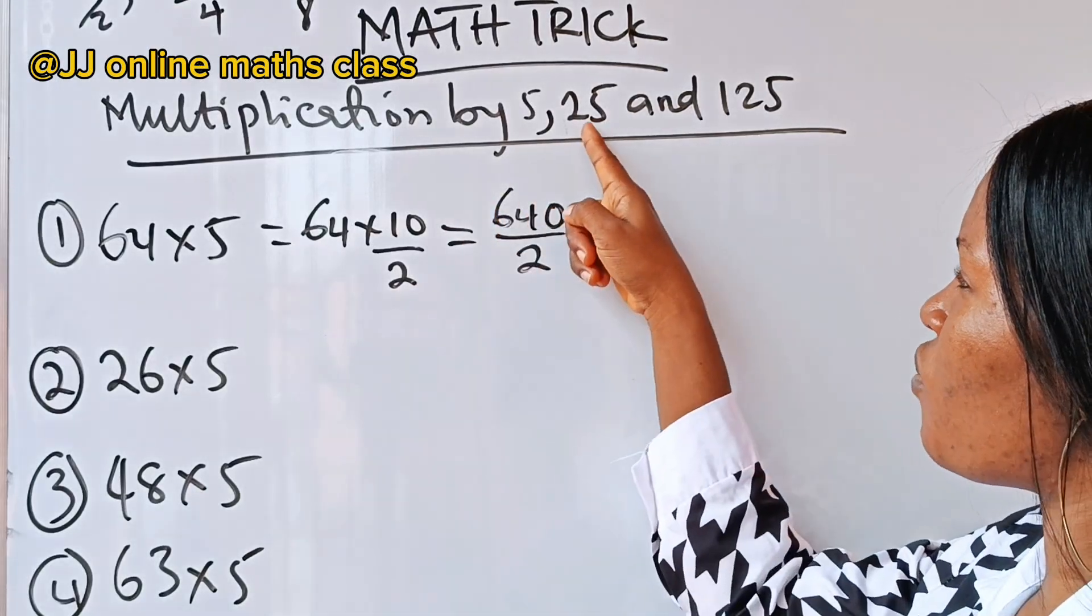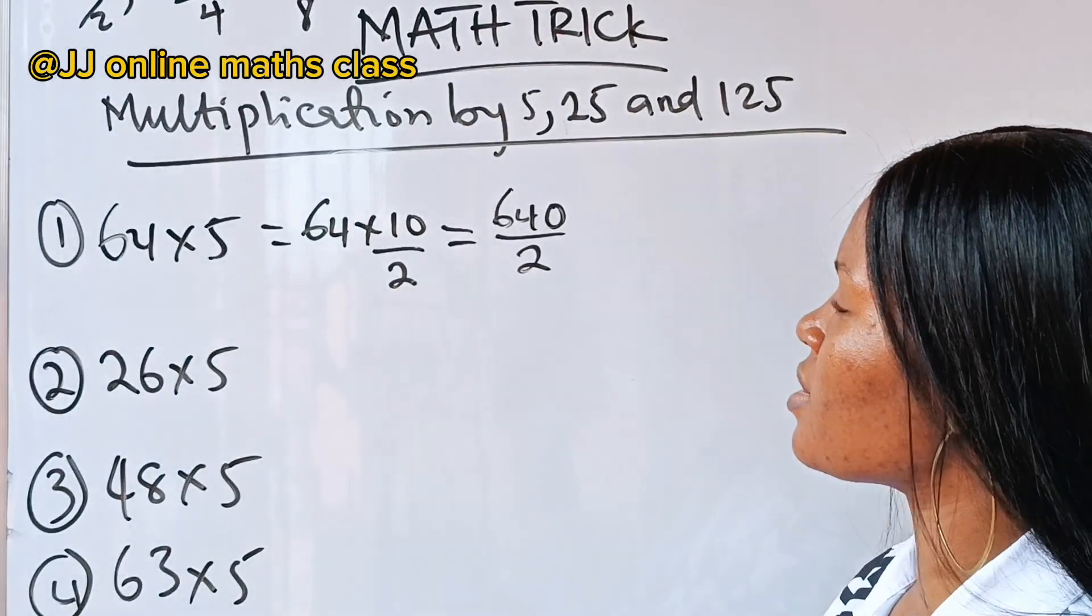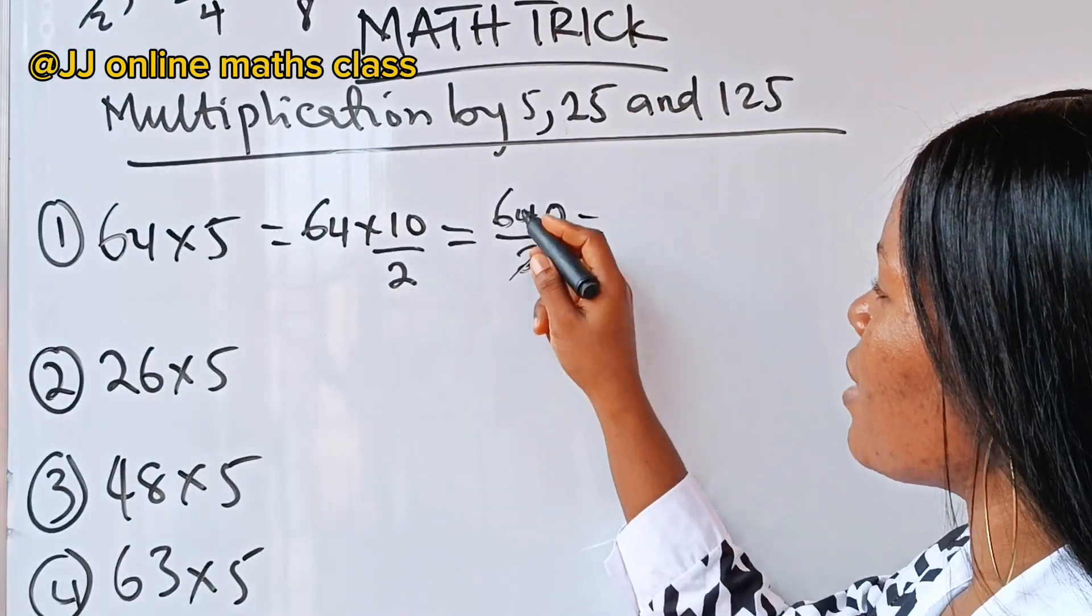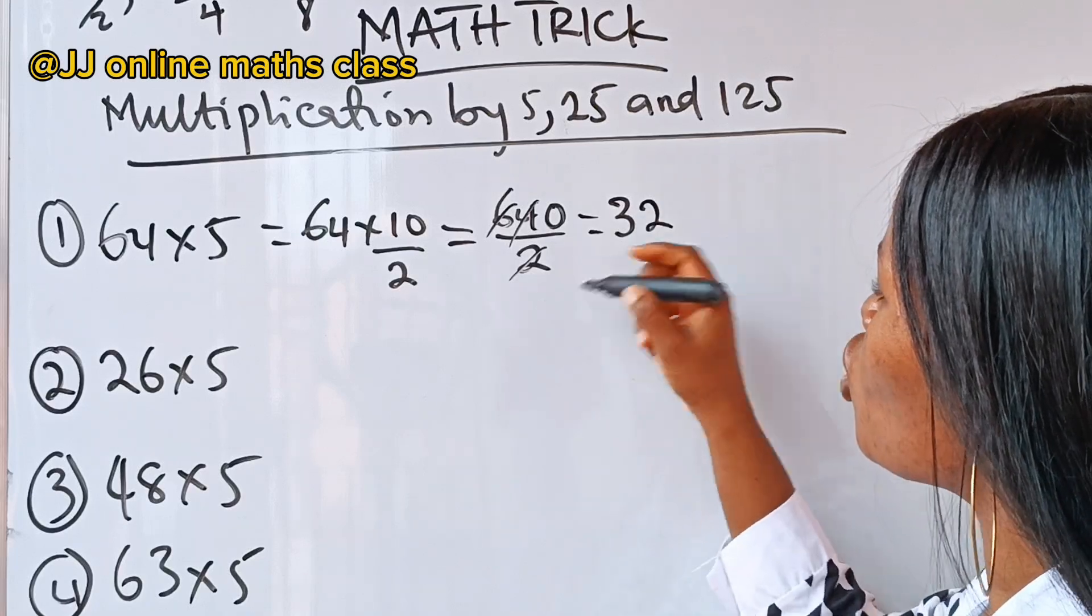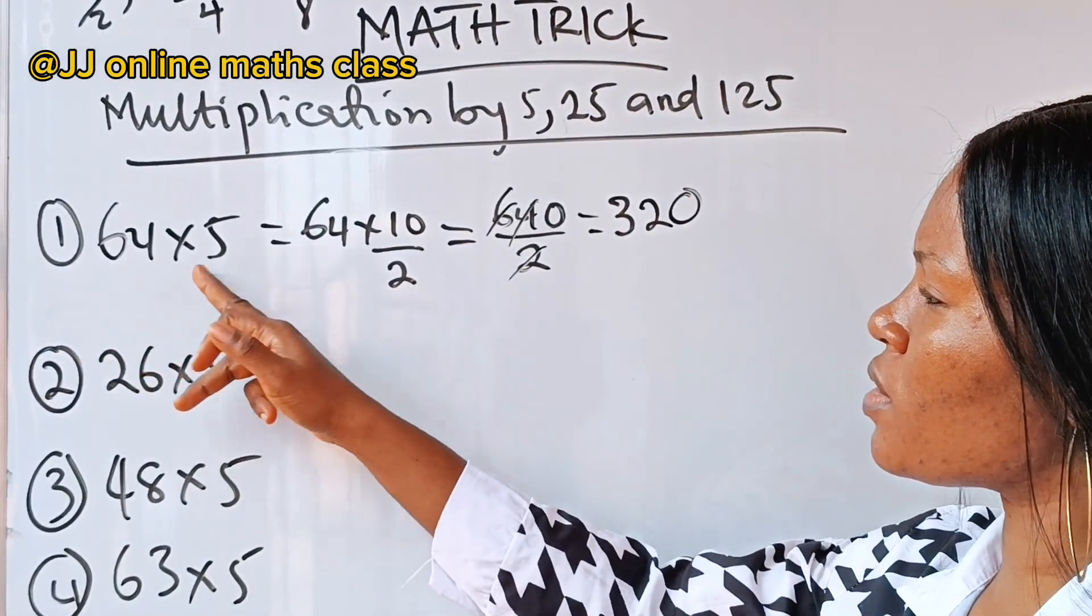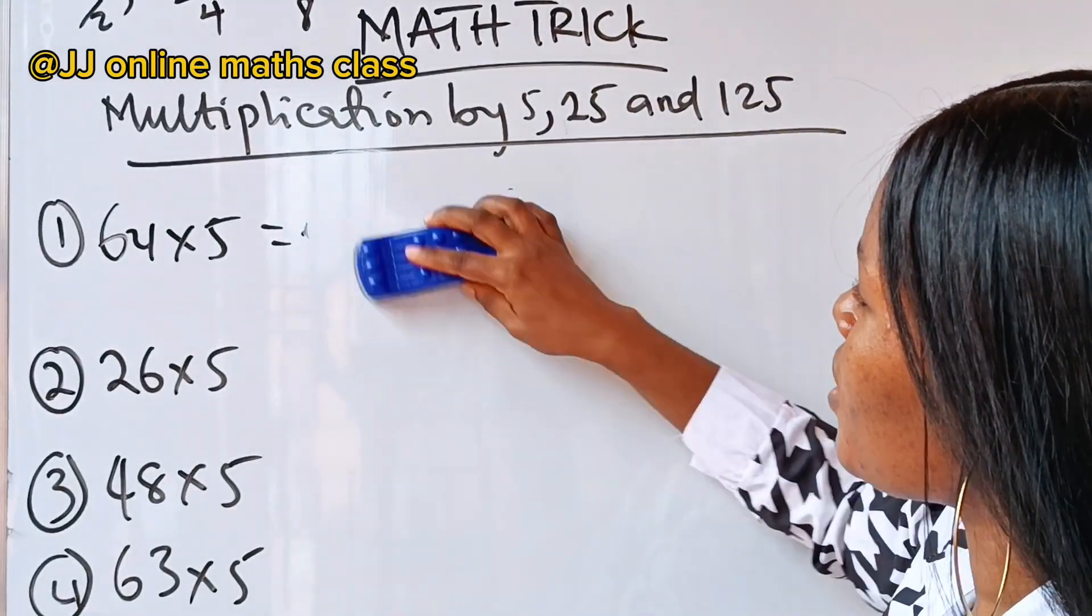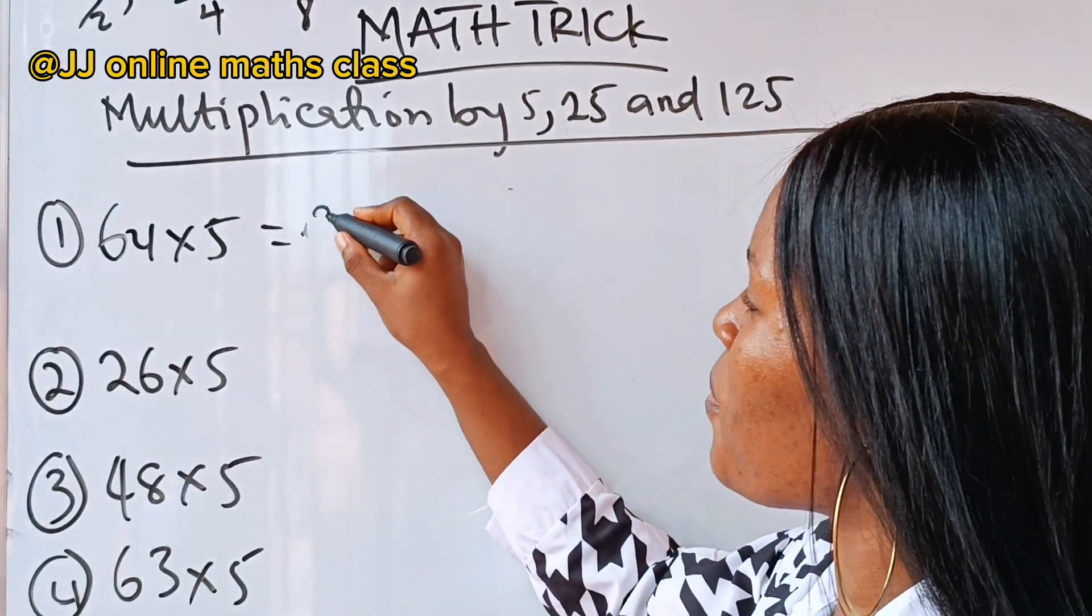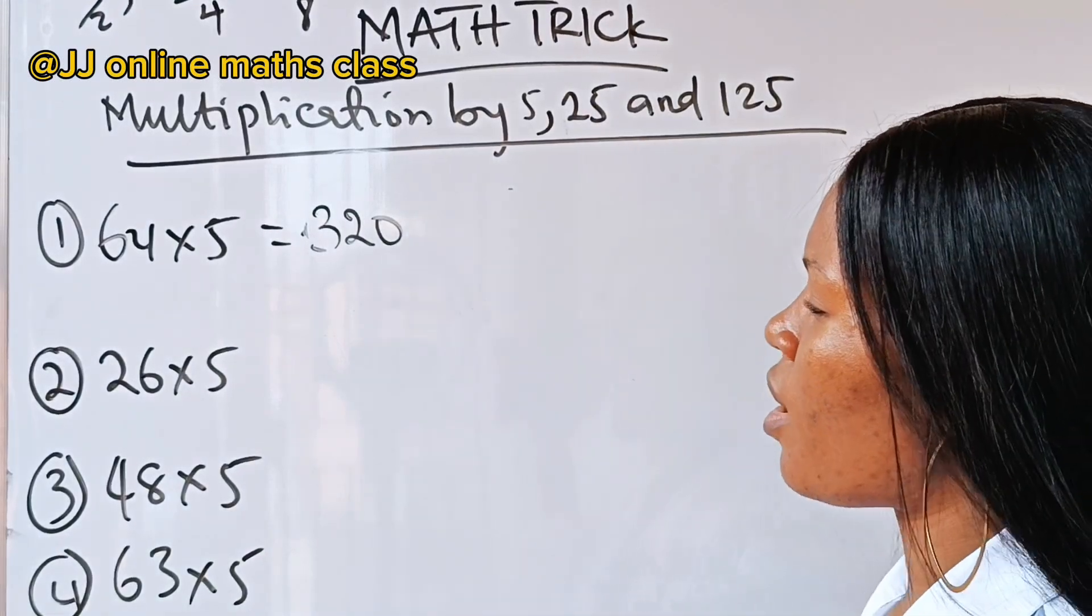Note, you are still going to do for 25 and for 125. This is just for 5. So, when you divide this by 2, when 2 divides 6, you have 3, when 2 divides 4, you have 2, when 2 divides 0, you have 0. So, this simply means that 64 multiplied by 5 is 320. You can also press your calculator to confirm what I just did.